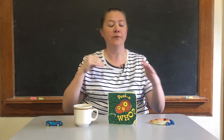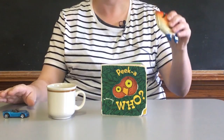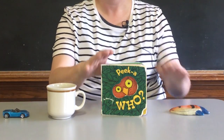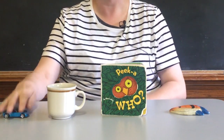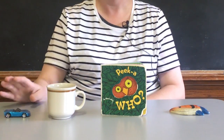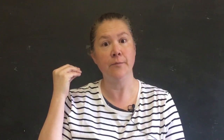I would first explain to them the objects on the table. I would say, this is a fish, this is a book, this is a cup, and this is a car. Then I'd say, my hungry monster is really hungry, and he's telling me in my ear what he wants to eat.